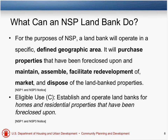Regarding land banking activities for NSP: the key takeaway is that we're talking about a defined geographic area overlapping with the NSP target areas grantees have already defined. Land banks will purchase, maintain, and dispose — those are the three key activities. The eligible use definition drives the tone of what we're talking about. Eligible activities are acquisition and disposition for foreclosed properties, including associated activities: due diligence on purchase, the purchase price itself, closing costs, the interim maintenance and management period between acquisition and disposition, and back-end disposition costs such as resale and closing costs.